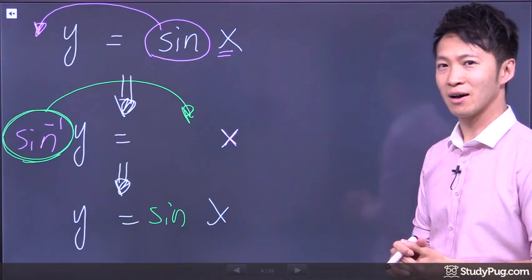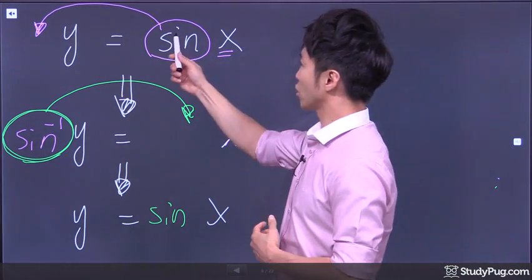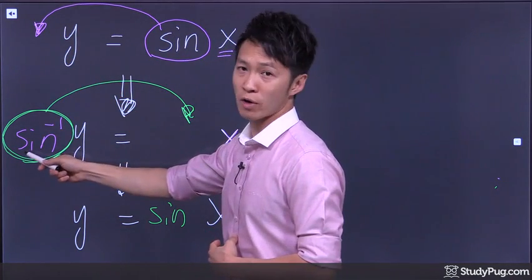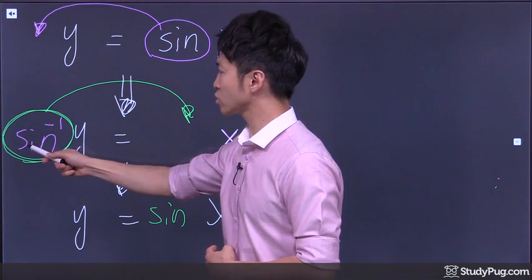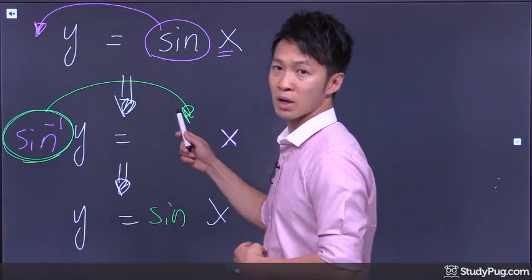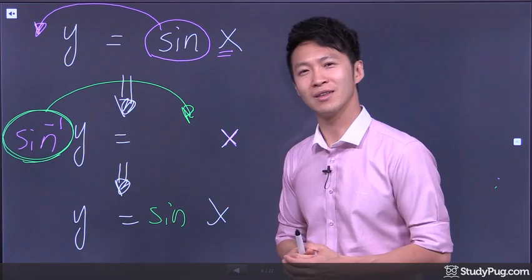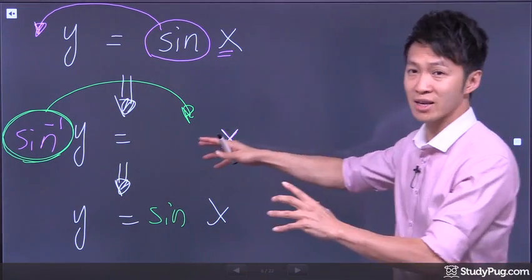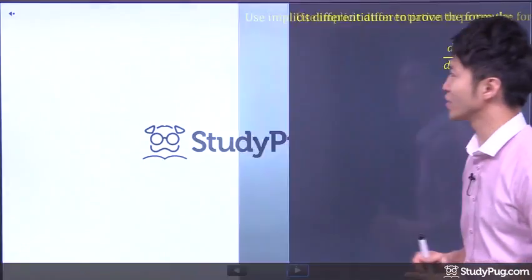Yeah. A regular trigonometry function goes to the other side becomes an inverse trigonometry function. The inverse trigonometry function goes to the other side becomes a regular trigonometry function. Pretty cool stuff, right? Cool. So I want to bring this idea with you to our next question here.